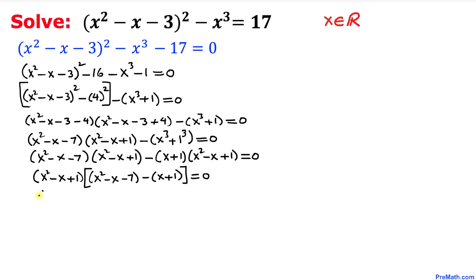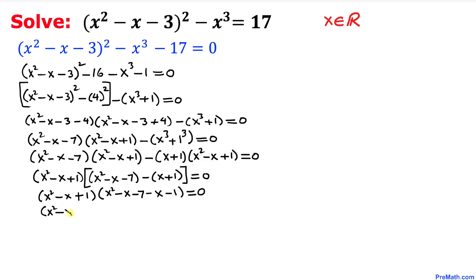Let's simplify further. We have (x squared minus x plus 1), and then distributing the negative sign inside gives us x squared minus x minus 7 minus x minus 1. Combining like terms, this becomes (x squared minus x plus 1) times (x squared minus 2x minus 8), equal to 0.